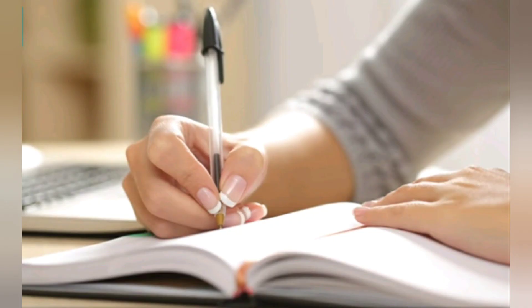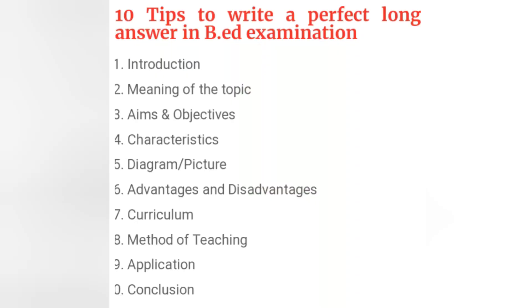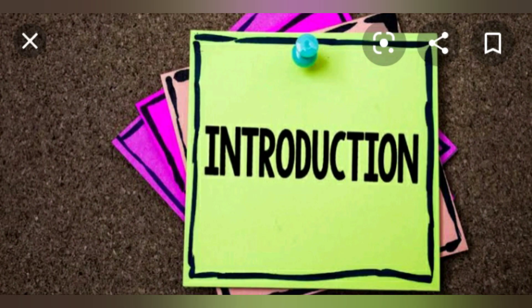Hi students, today we are going to see 10 tips to write a perfect long answer in BA examination. There are 10 points: first is introduction, second meaning of the topic, third aim and objectives, fourth characteristics, fifth diagram or a picture, sixth advantages and disadvantages, seventh curriculum, eighth method of teaching, ninth application, and at last the tenth is conclusion. Let's see in detail.